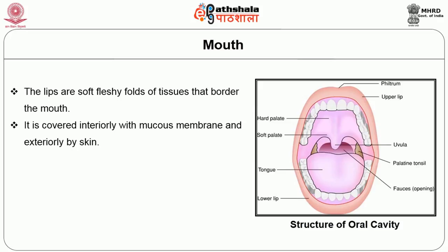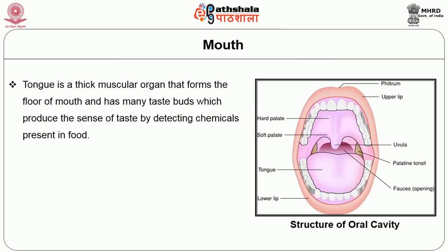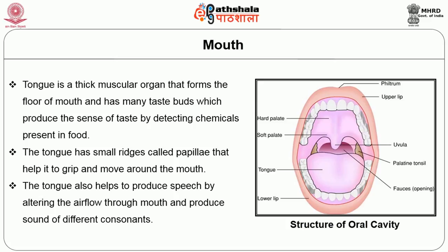The lips also encompass the upper and outer lip. Lateral to the lips are the fleshy cheeks that form the sides of the mouth. The tongue is a muscular organ that forms the floor of the mouth and has many taste buds which produce the sense of taste by detecting chemicals present in food. The tongue has small ridges called papillae that help it to grip and move food around the mouth.